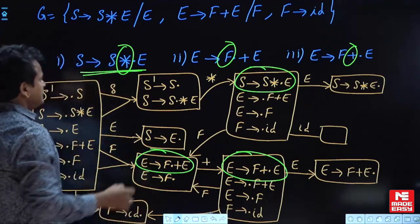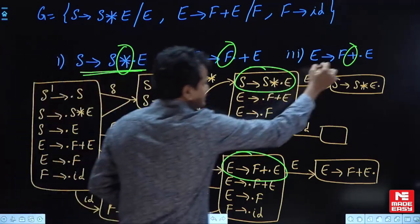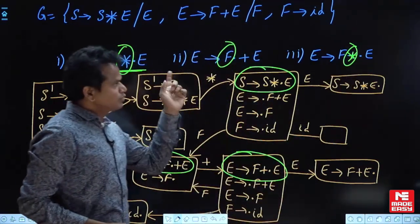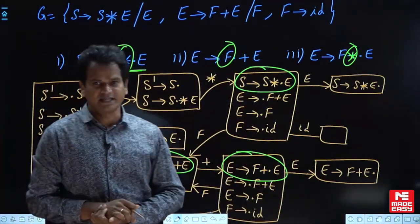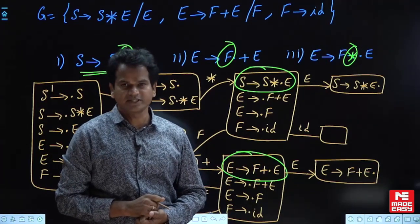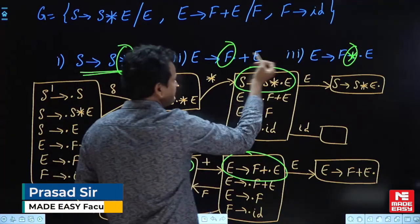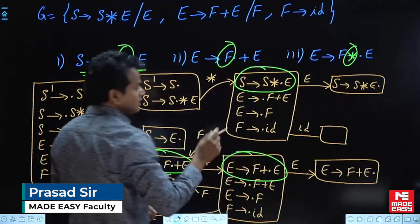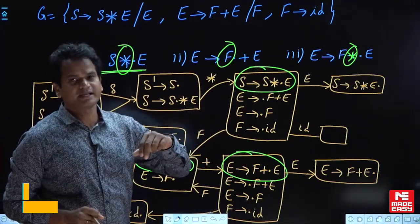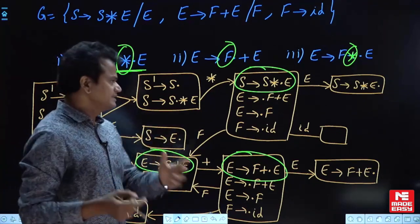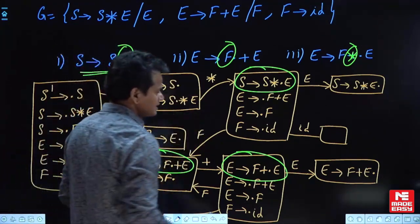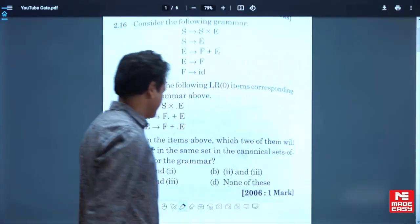Suppose this one has star and this one also has star — if two items both have star before the dot, then those two may come in the same state, and the chance is there. In that case, you have to do the full construction. So for this question, the answer is none.